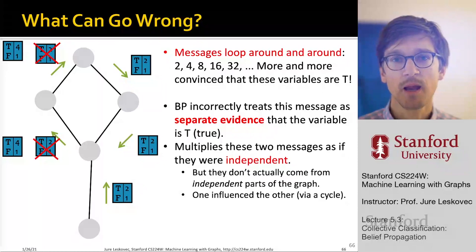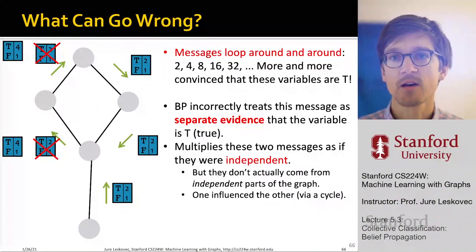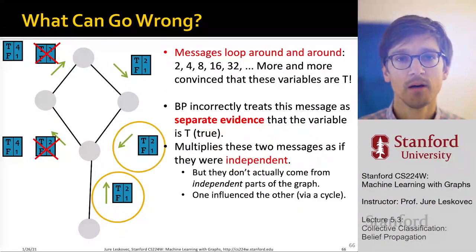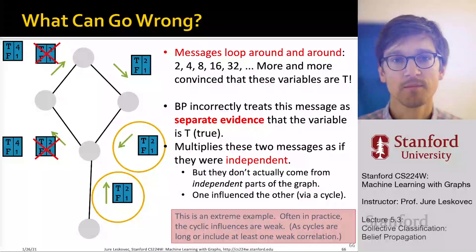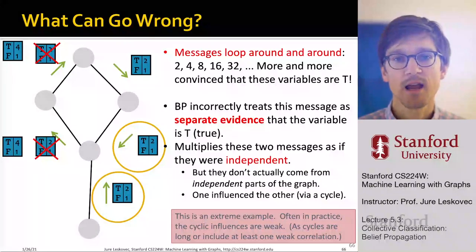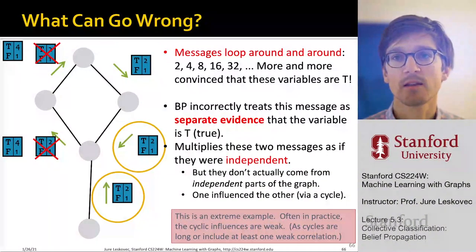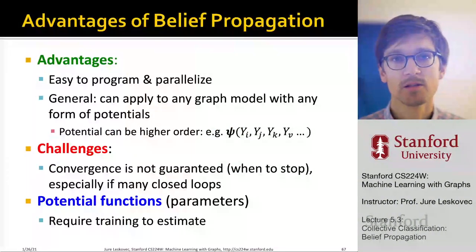In practice, real graphs tend to look more like trees. Cycles are either few, long, or include at least one weak correlation so that the message strength gets broken. So cycles don't cause too much of a problem in practice, and this was an extreme example.